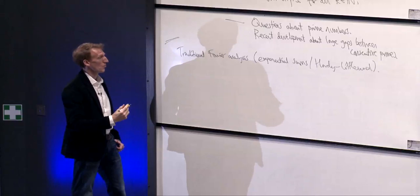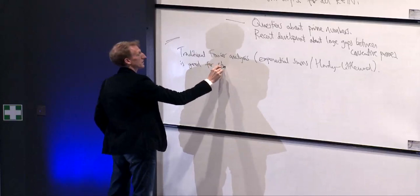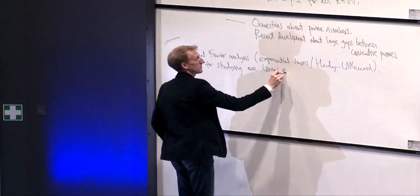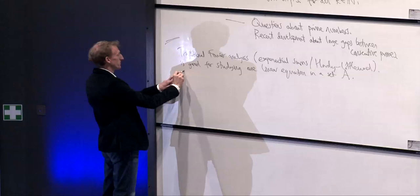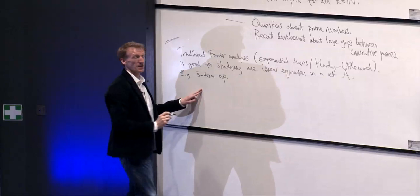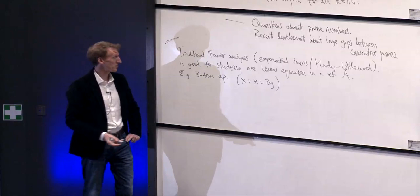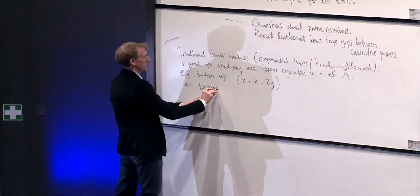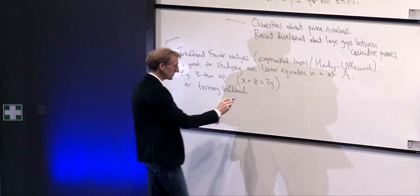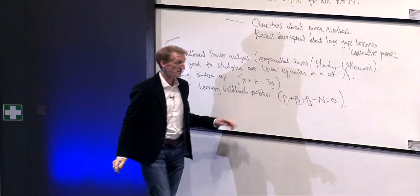This is good for studying one linear equation in a set A. For example, you could use this to study three-term arithmetic progressions. A three-term AP consists of three equally spaced elements satisfying x + z = 2y. Or other equations, for example the Ternary Goldbach conjecture — something we've been hearing a lot about lately — which involves solving an affine linear equation in prime variables p1, p2, and p3.